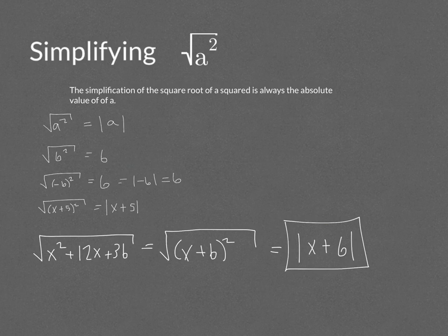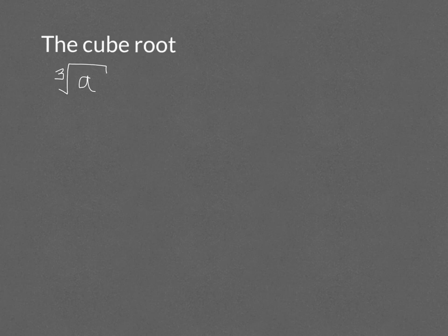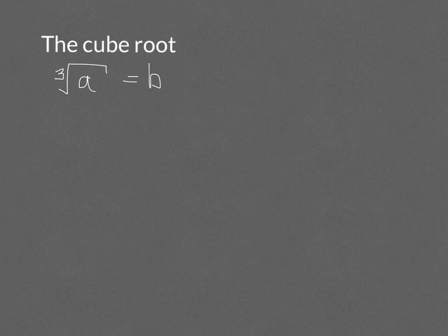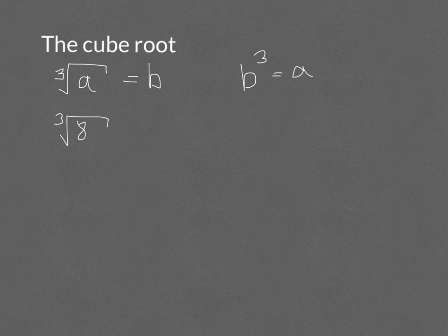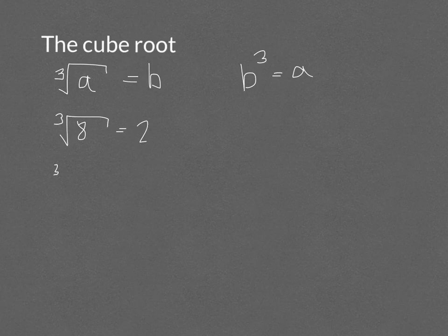We don't only have square roots — we also have higher-powered roots. The cube root of a equals b means there is a number b where if you cube it, it equals a. For example, the cube root of 8 is 2 because 2 times 2 times 2 is 8. The cube root of 27 is 3 because 3 times 3 times 3 is 27.